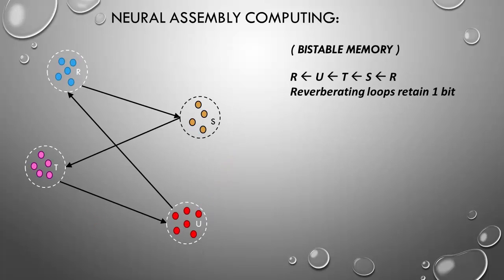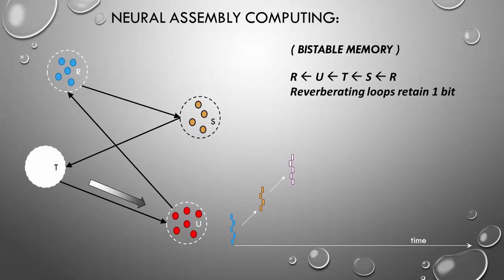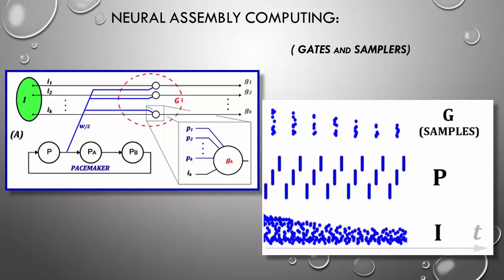Memorizing information is important for retaining data for posterior sequential processing. It is simple to construct a 1-bit memory in neural assembly computing with a reverberating loop. We consider an assembly R that triggers S, that triggers T, that triggers U, that triggers R back. These assemblies form a loop that may reverberate forever. Such loop retains one bit of information. In order to dismantle the loop, we need to inhibit one assembly. This kind of loop is also important for creating rhythms in the spiking neural network. By joining this base of functions, AND, OR, NOT and MEMORY, we can create a range of gates and complex functions that control information processing.